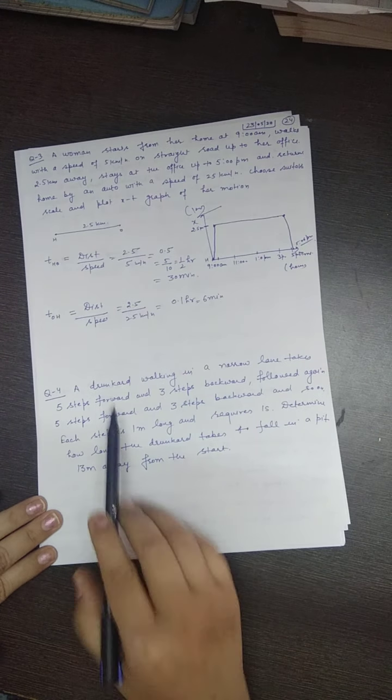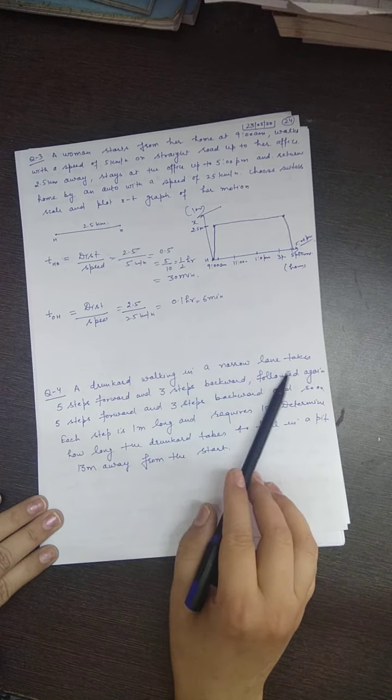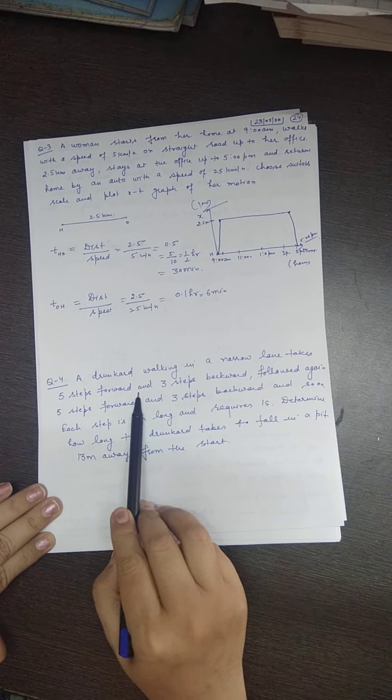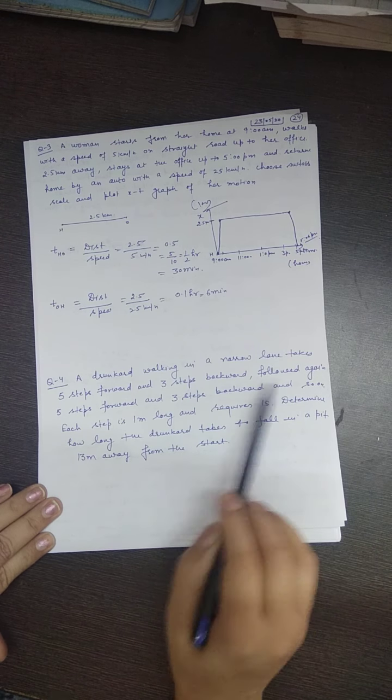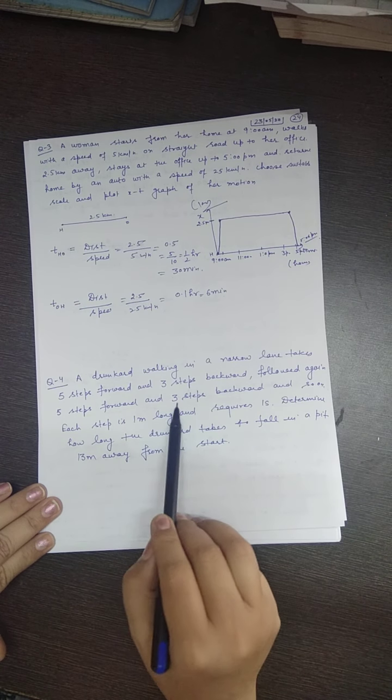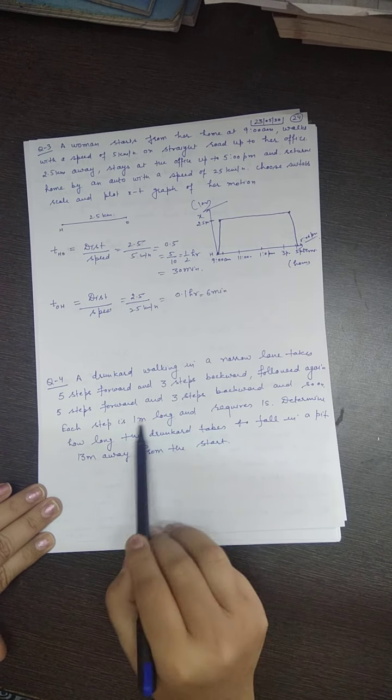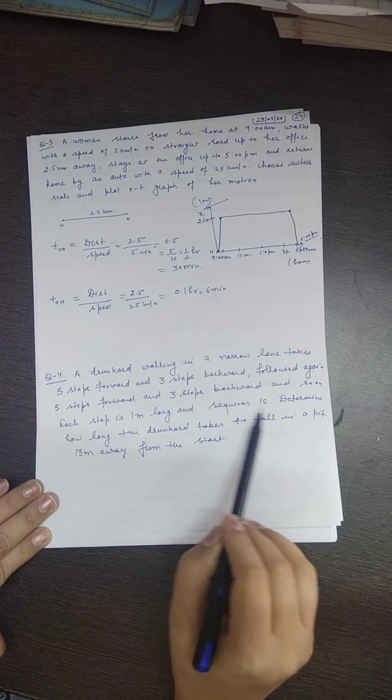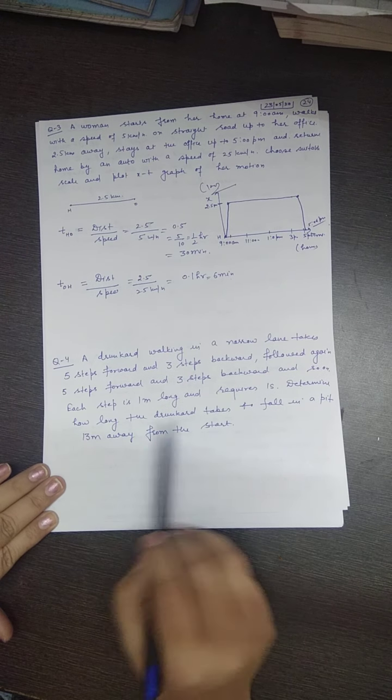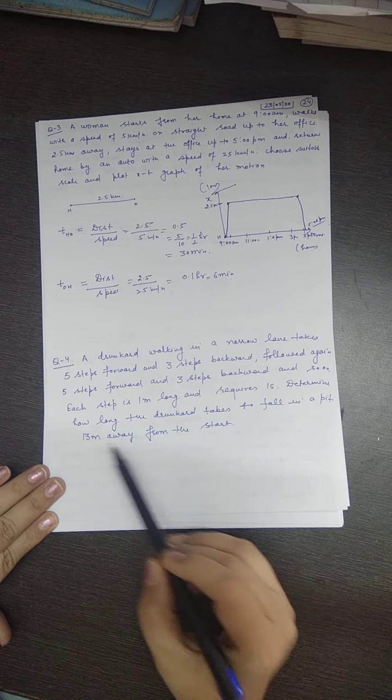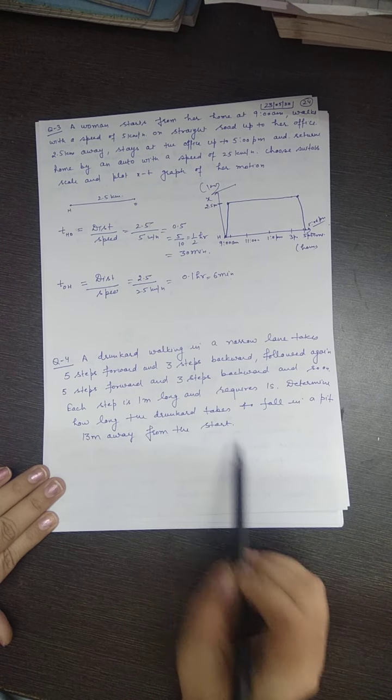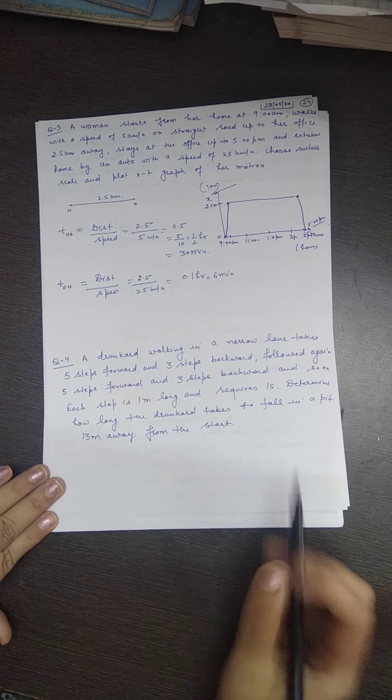Now in the next question, a drunkard walking in a narrow lane takes five steps forward and three steps backward, followed again by five steps forward and three steps backward, and so on. Each step is one meter long and requires one second. Find how long the drunkard takes to fall in a pit 13 meters away from the start.